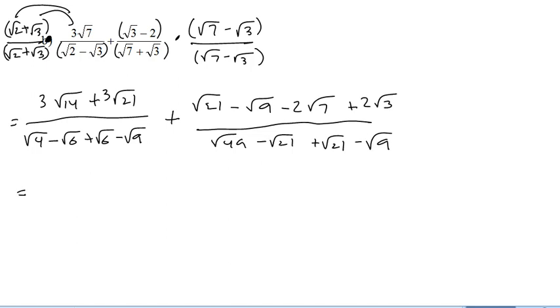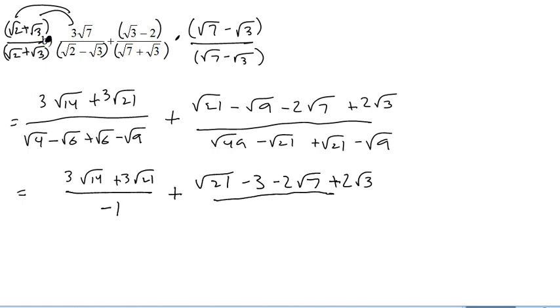Okay, so the top on the left here, there's nothing we can do about that. We're going to get 3 root 14 plus 3 root 21, and that's going to be over 2 minus 3 is negative 1. Root 21 minus 3 minus 2 root 7 plus 2 root 3, and that's going to be over 7 minus 3 is 4.